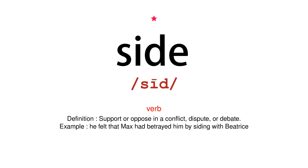Verb. Definition: support or oppose in a conflict, dispute, or debate. Example: he felt that Max had betrayed him by siding with Beatrice.